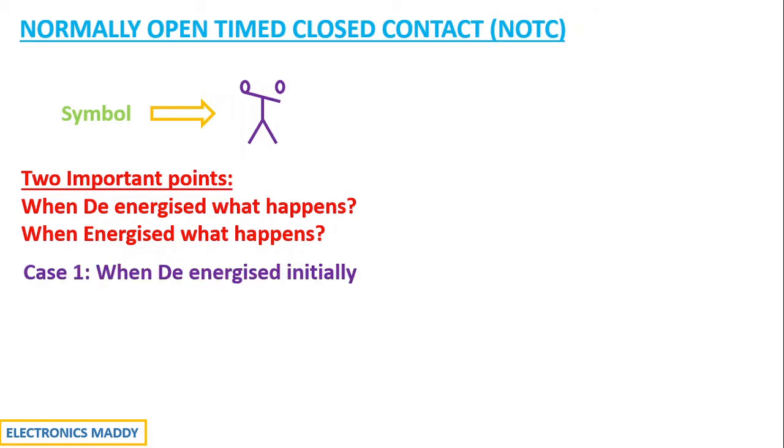Case one: let us initially assume the contact is not energized, so it is in a de-energized state. I have considered a simple normally open contact, and this NOTC is used, connecting it to a light load.